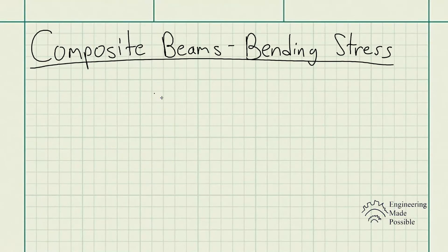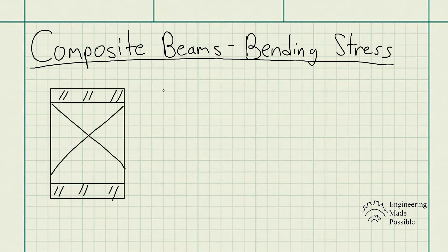Today we'll be going over composite beams in bending and calculating the bending stress developed. First off, what exactly is a composite beam? Let's say we have this beam — this is the cross-sectional area of the beam.